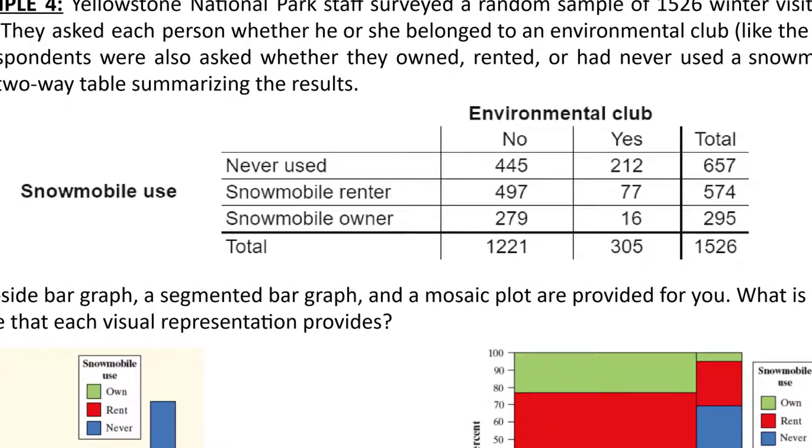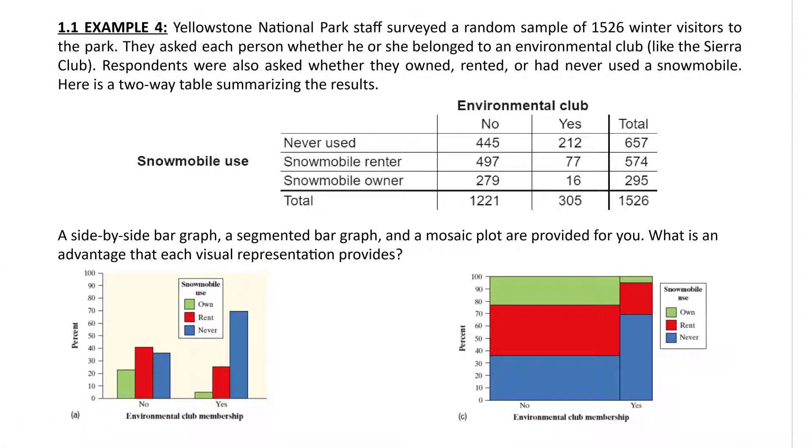In this two-way table, we can see the organization of the two variables of study: environmental club, whether they belong to one, yes or no, and then snowmobile use. Below, they are giving us three graphs: a side-by-side bar graph, a segmented bar graph, and a mosaic plot. And what we want to talk about is the advantage of each visual representation.